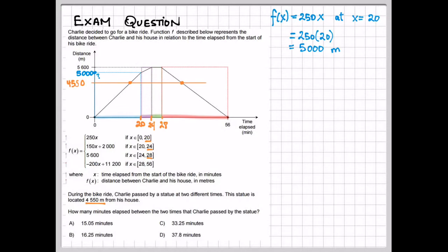To find the time that he crosses, for the first time he crosses the statue, we're going to use the first piece of the graph. And so working backwards, we need to find the value of x when y is equal to 4,550. Working backwards, we get x is equal to 18.2 minutes, which means that 18.2 minutes is the first time he sees that statue.